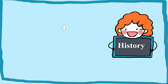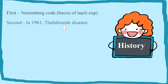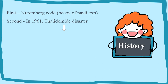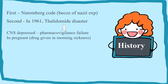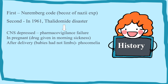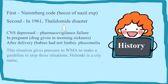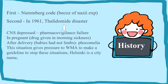Now for the history. The origin of this declaration involved tragedies such as the Nazi experiments. In 1961, there was a major disaster involving the Thalidomide drug, which was given to pregnant women as a CNS depressant. The result was that babies were born without fully developed limbs — their hands and feet were not properly formed. After this incident, the World Medical Association was required to make formal guidelines.